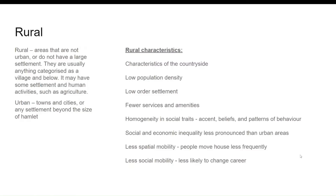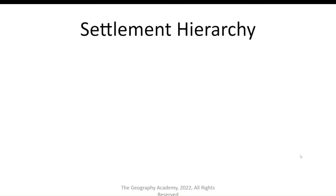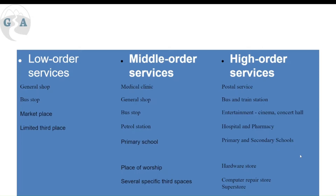There is less spatial mobility — people tend to have a home or property and stay there, not moving as frequently. There is also less social mobility, meaning fewer opportunities for a change in career or job. Moving to the settlement hierarchy, we talk about low order, middle order, and high order services. For a rural area, we tend to find low order services.